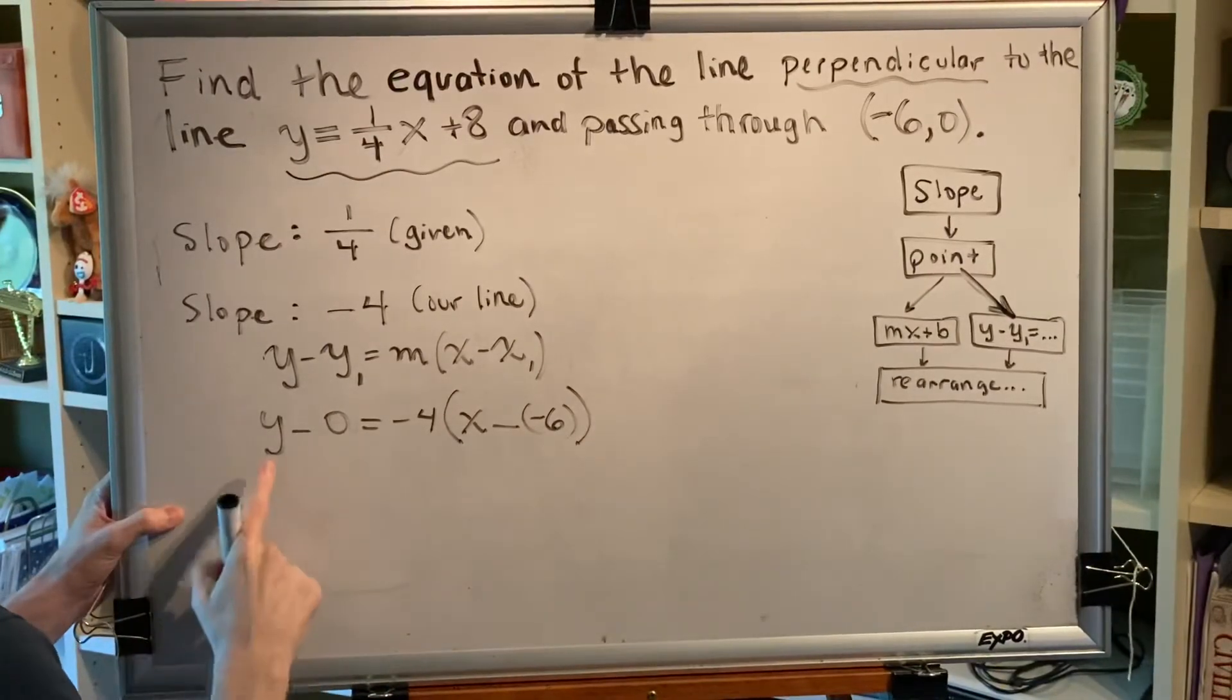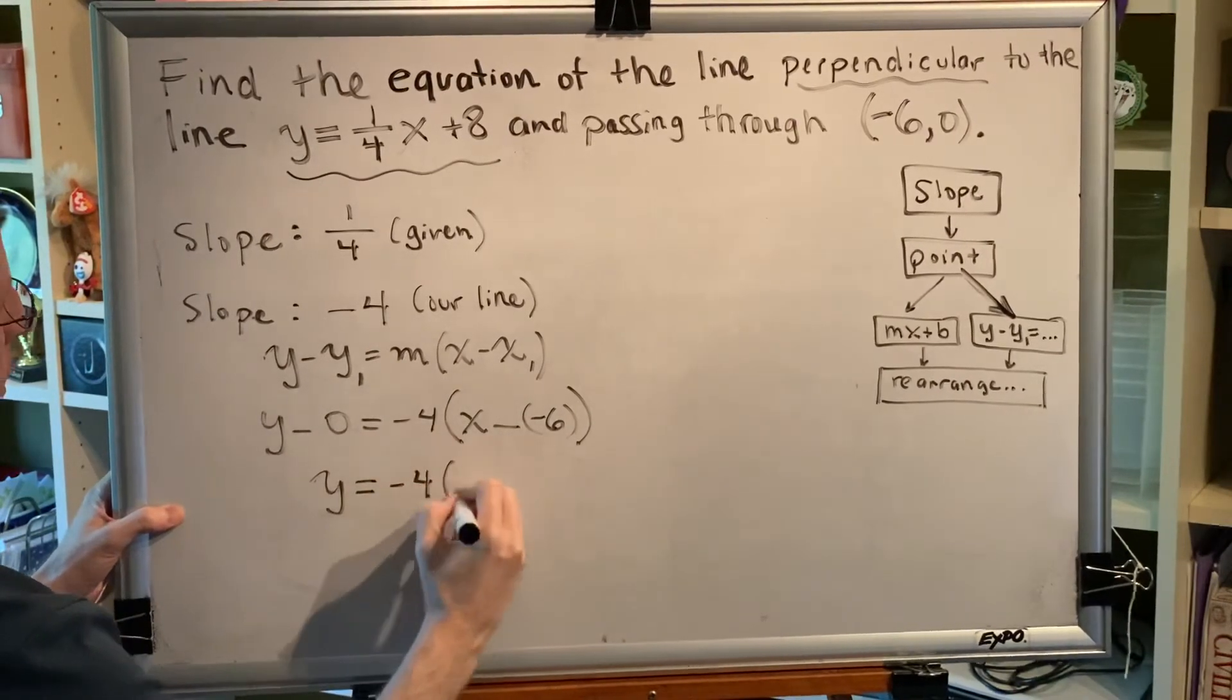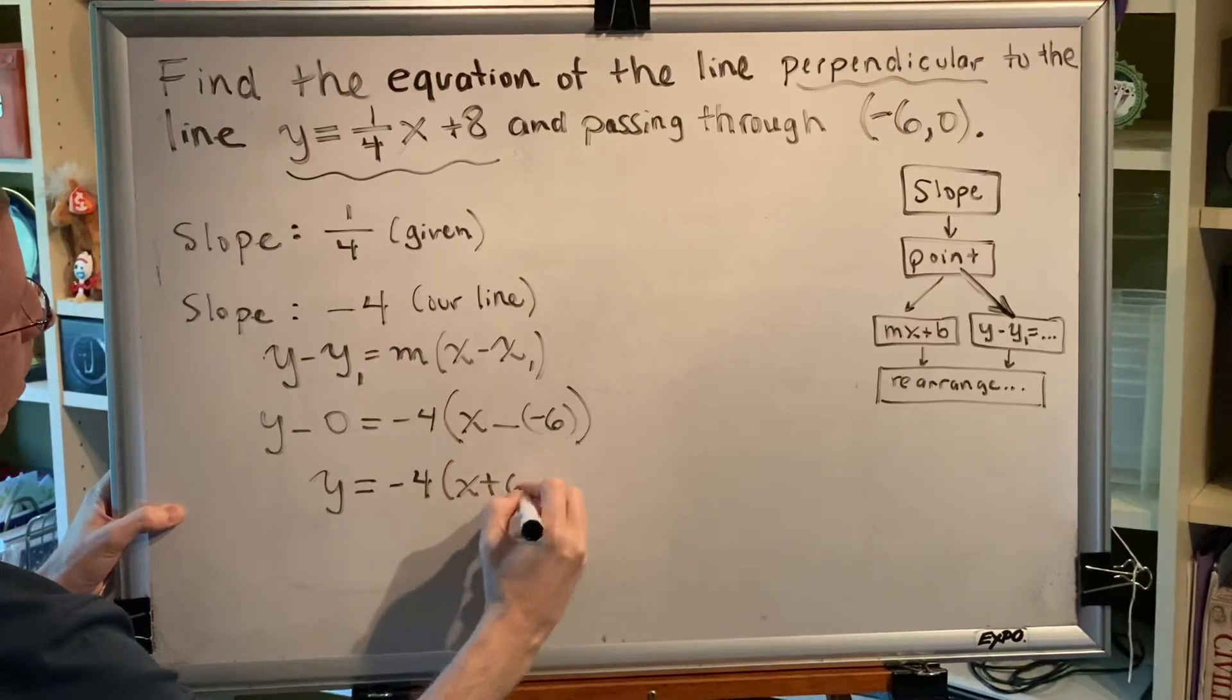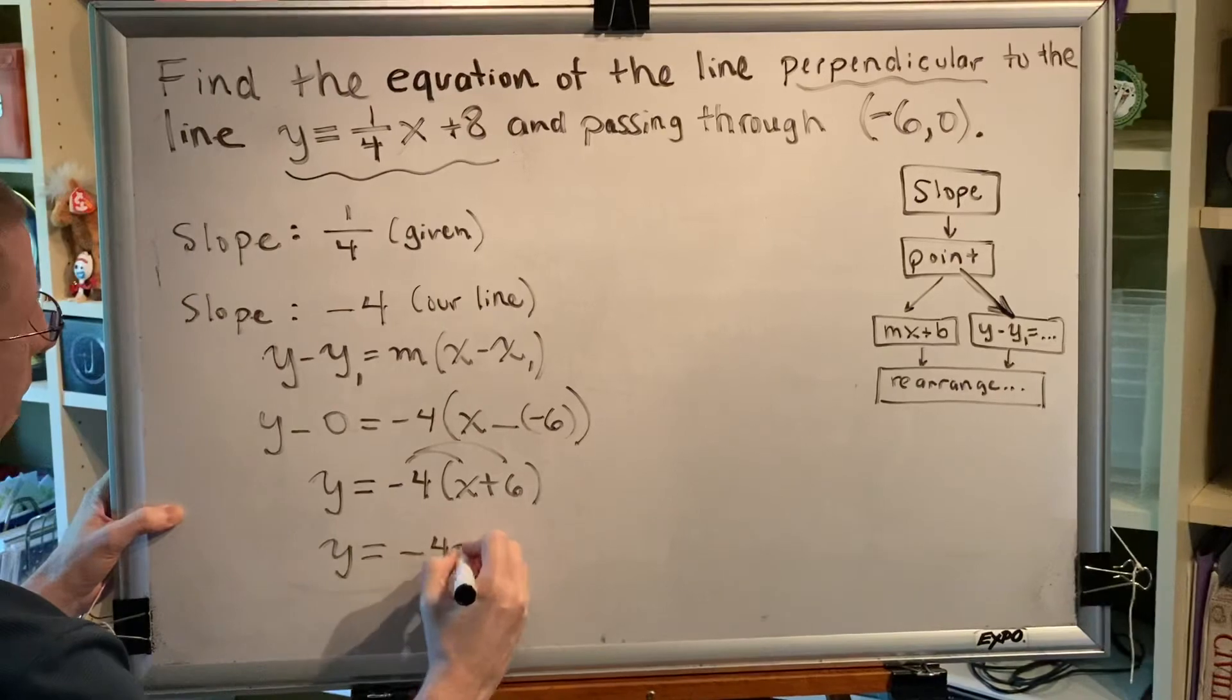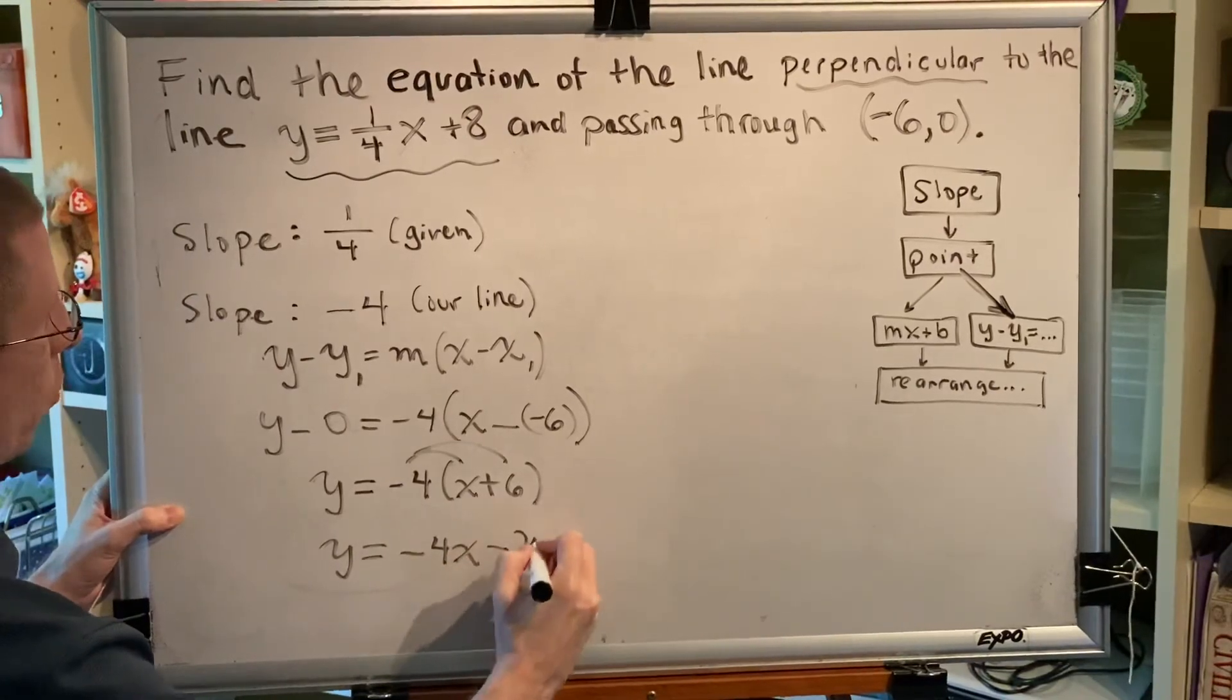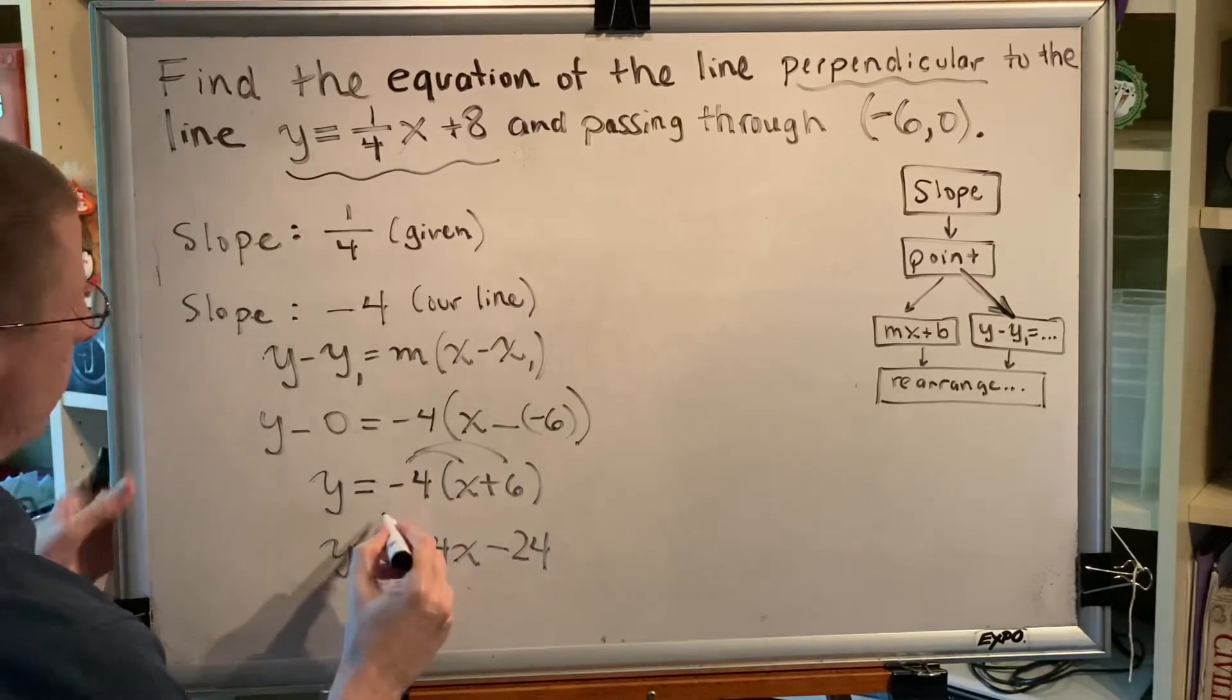and subtracting zero means you're left with what you started with. So y minus zero is simply y. Distribute the negative 4, and we get y equals negative 4x minus 24. This is our final answer for this problem.